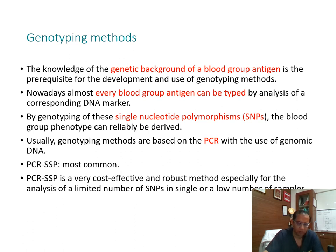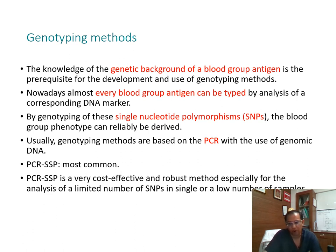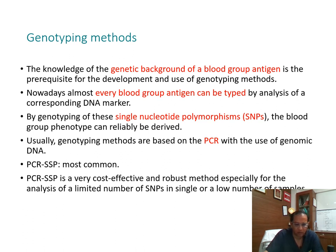The way forward is the genotyping method. To have genotyping methods in place, you need to know the genetic background of each major and minor blood group antigen. Every blood group antigen has been characterized after the human genome project, and there is a corresponding DNA marker for each. Most blood group phenotype genotyping can be deciphered through single nucleotide polymorphisms. Genotyping methods are based on the PCR method — polymerase chain reaction — and within PCR, sequence-specific primer PCR, or PCR-SSP, is the most common. PCR-SSP is a very cost-effective, robust method for identifying blood group antigens.